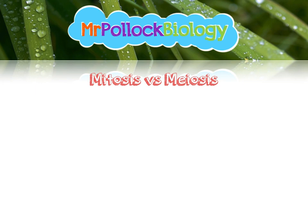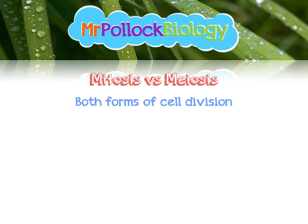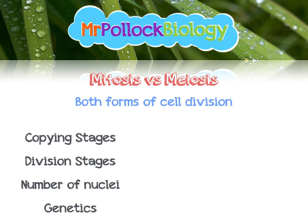Let's look at the key differences between mitosis and meiosis — for most of you this should be a recap of GCSE Unit 2. They are both forms of cell division, each producing different types of cells. Mitosis generally replaces body cells and allows us to grow and repair, whereas meiosis is involved in producing the gamete cells or sex cells. In mitosis we have one copying stage and one division stage, producing two identical diploid daughter cells.